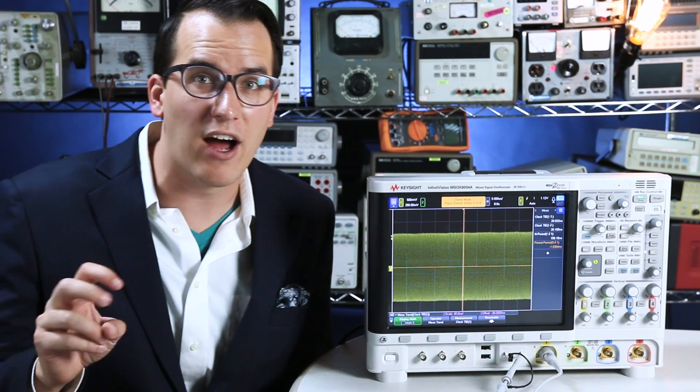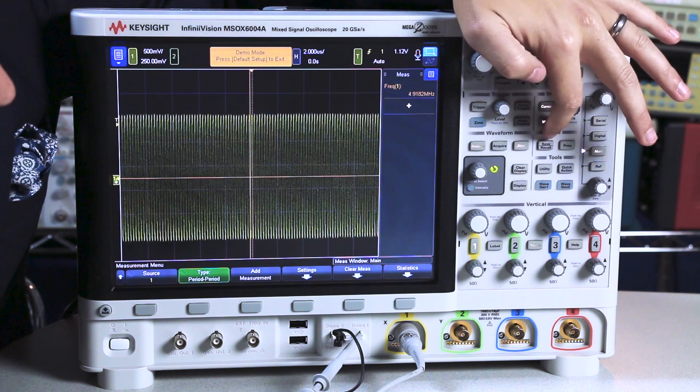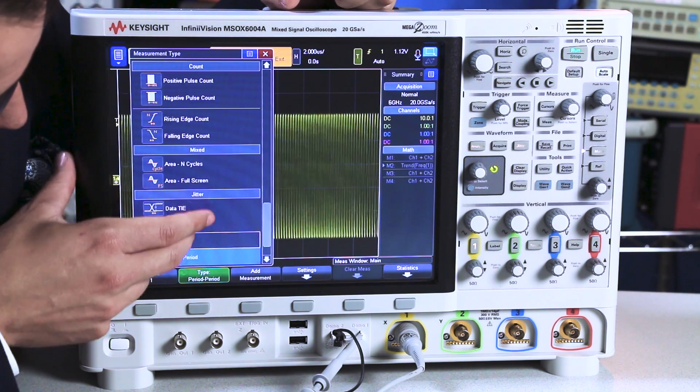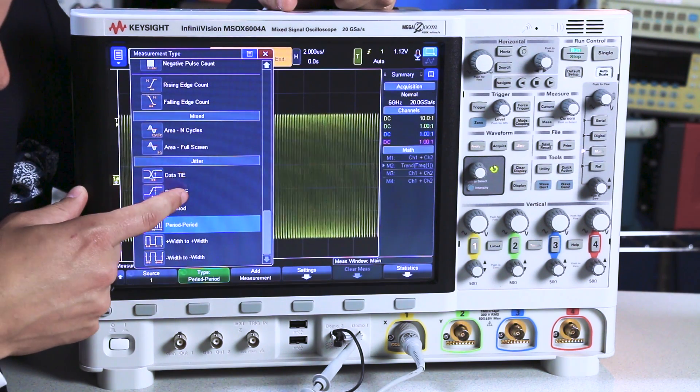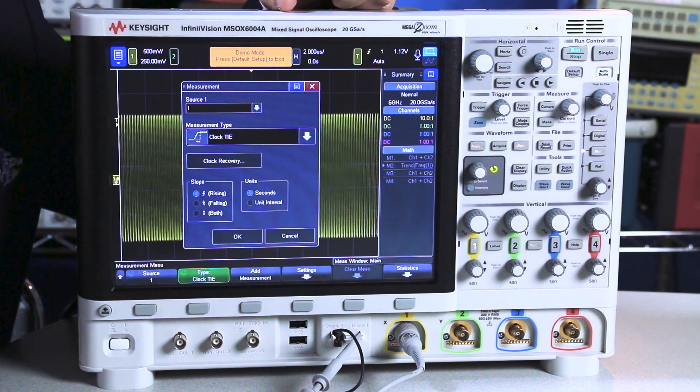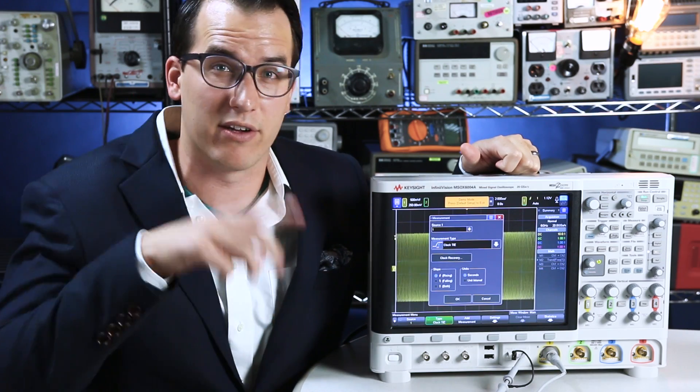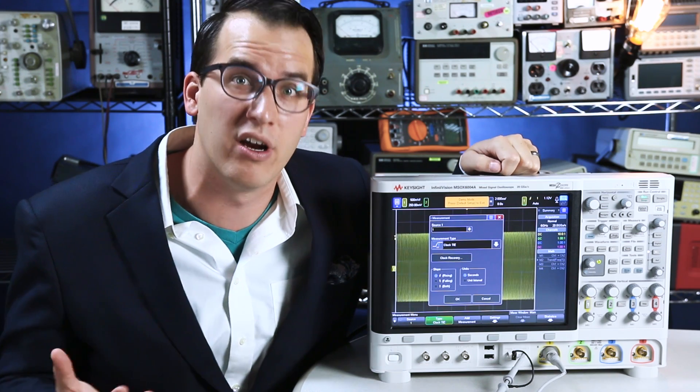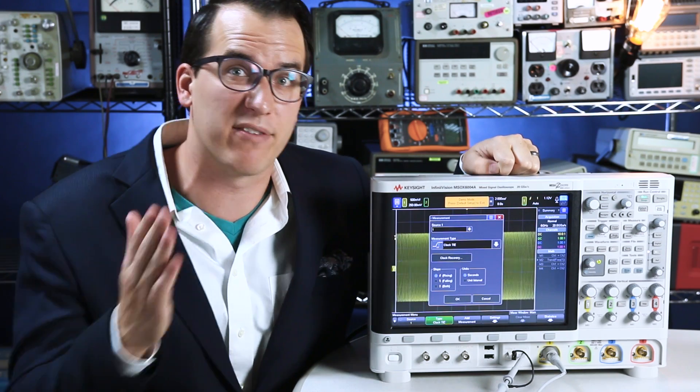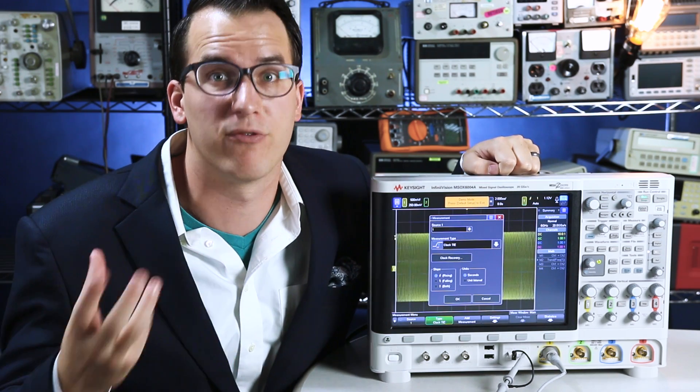So timing jitter is often measured with a time interval error measurement. I'm going to hit measure and we're going to add a clock time interval error measurement TIE, and the reason we want to add a clock measurement is because our signal is a clock signal, it's repetitive. You can also look at jitter for data signals, you just have to recover that ideal clock period from the data signal.